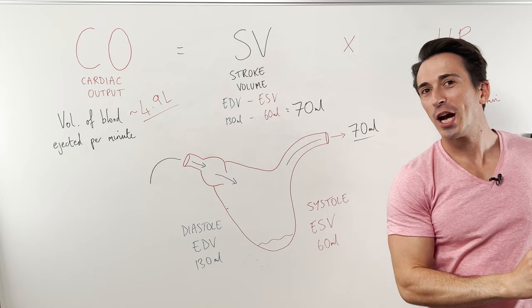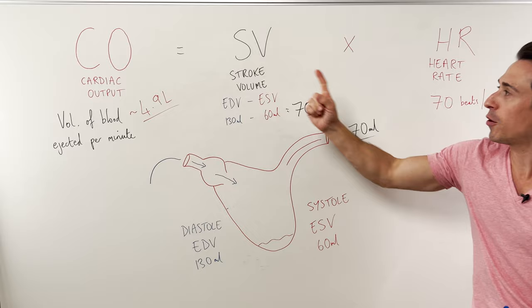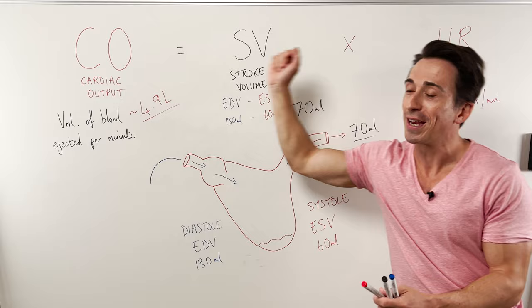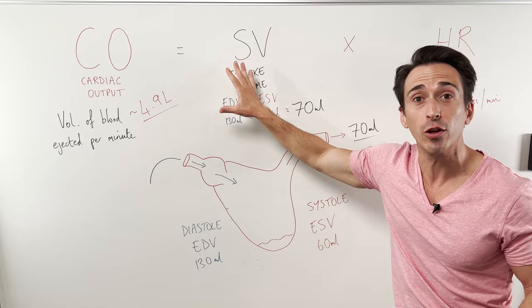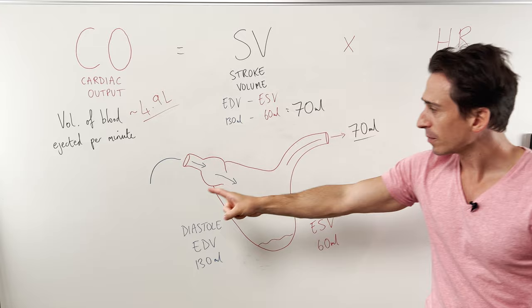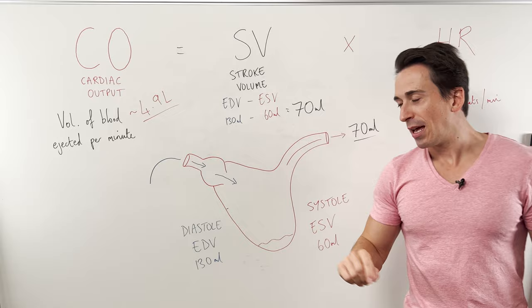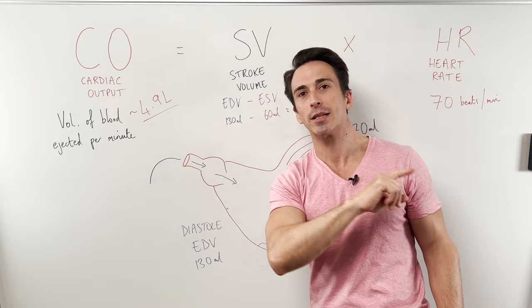We can change cardiac output by changing stroke volume or heart rate. Increase stroke volume or heart rate and you increase cardiac output; decrease either and cardiac output goes down. So what things contribute to stroke volume changing? Three important things: venous return filling the heart, contraction of the heart, and ejection of blood out of the heart. Altering any of these three will alter stroke volume and therefore cardiac output.